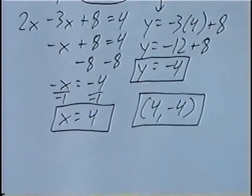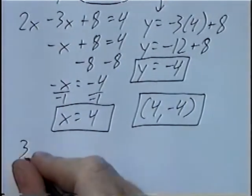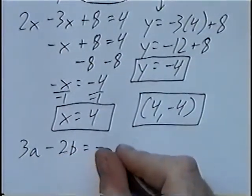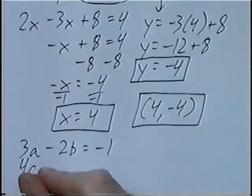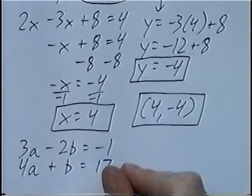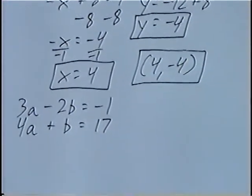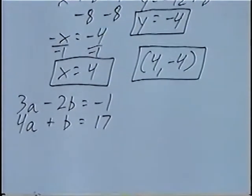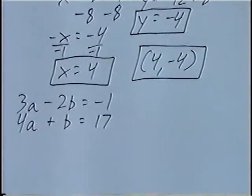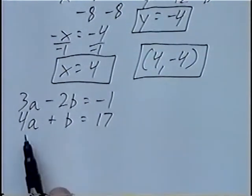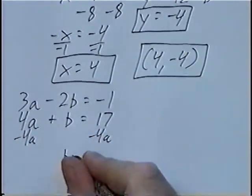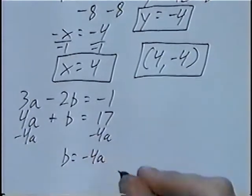Second and last question for the section. First equation: 3a minus 2b equals negative 1. Second equation: 4a plus b equals 17. Solving by substitution, we want to isolate either a or b. The easiest one to isolate would be b in the second equation by subtracting 4a, so b would equal negative 4a plus 17.